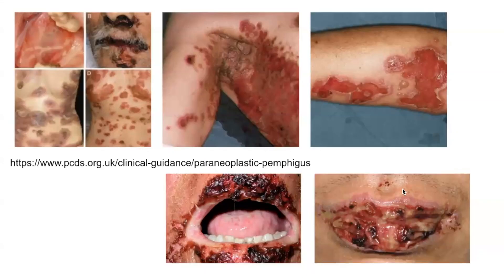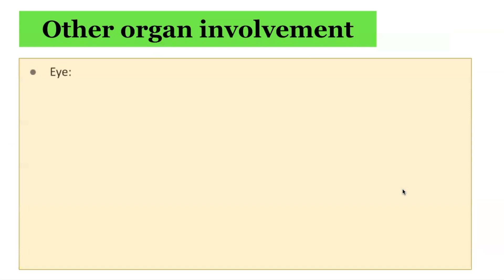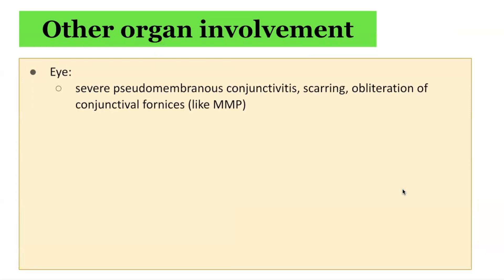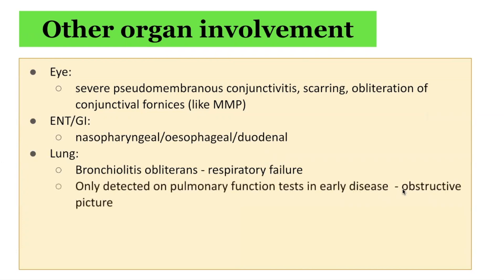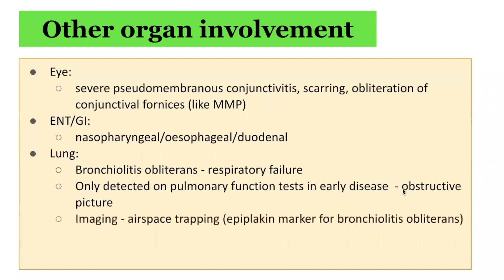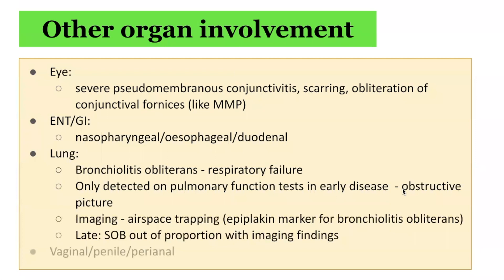There are also other organs that can be involved. In terms of the eye, severe pseudomembranous conjunctivitis, scarring, and obliteration of conjunctival fornices can occur, similar to mucous membrane pemphigoid. There is also ENT and gastrointestinal involvement, with nasopharyngeal, esophageal, and duodenal lesions. In terms of the lung, some patients develop bronchiolitis obliterans, which can result in respiratory failure. It is only detected on pulmonary function testing in early disease, showing an obstructive picture. Imaging demonstrates airspace trapping, and in late cases there is dyspnea out of proportion with imaging findings. There may also be lesional involvement of the vaginal, penile, or perianal areas.